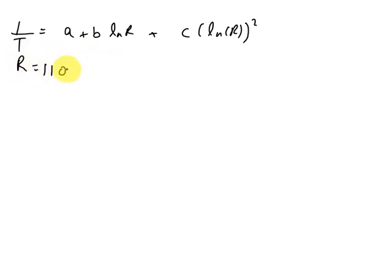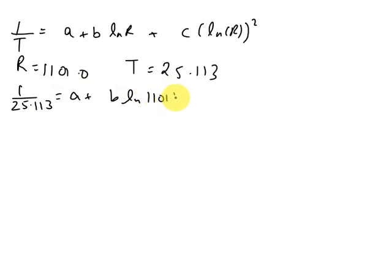Now when R is 1101.0, temperature is given to us as 25.113. So putting it over here, 1/25.113 equals A plus B ln(1101) plus C times ln(1101) whole square.